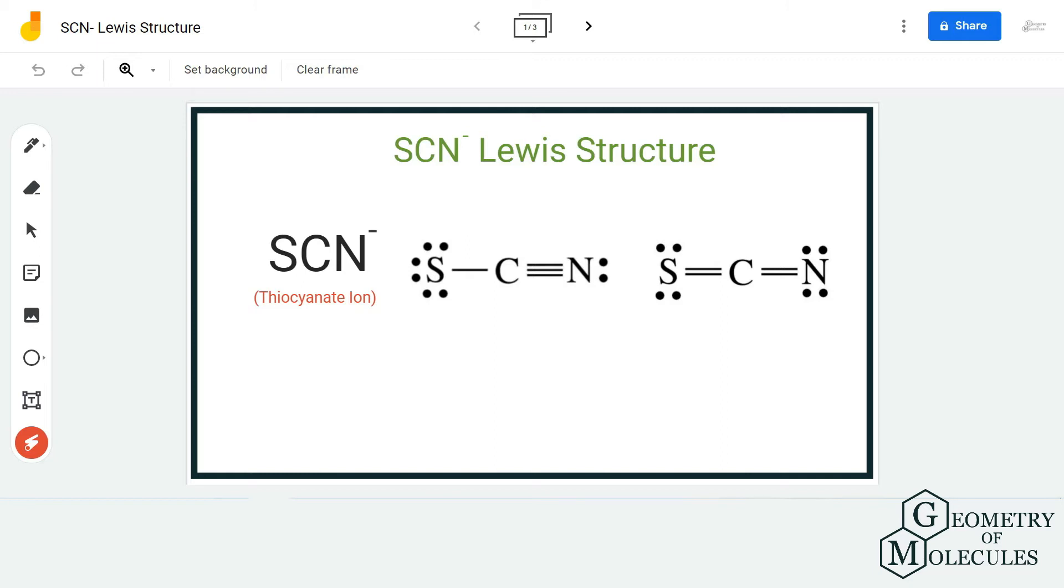You can see that we have these two structures over here. For coming up with the structures you can use the normal method we use: first we find out the total number of valence electrons and then we come up with the structures.